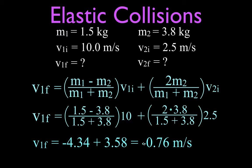Well what does that mean if it's minus 0.76 meters per second? That means that mass number one collides with mass number two. Remember mass number one was the smaller mass, mass number one has 1.5 kilograms compared to 3.8, and that means it's going to basically bounce off and be moving at a relatively low velocity, not 10 meters per second anymore but 0.76 meters per second in the opposite direction.